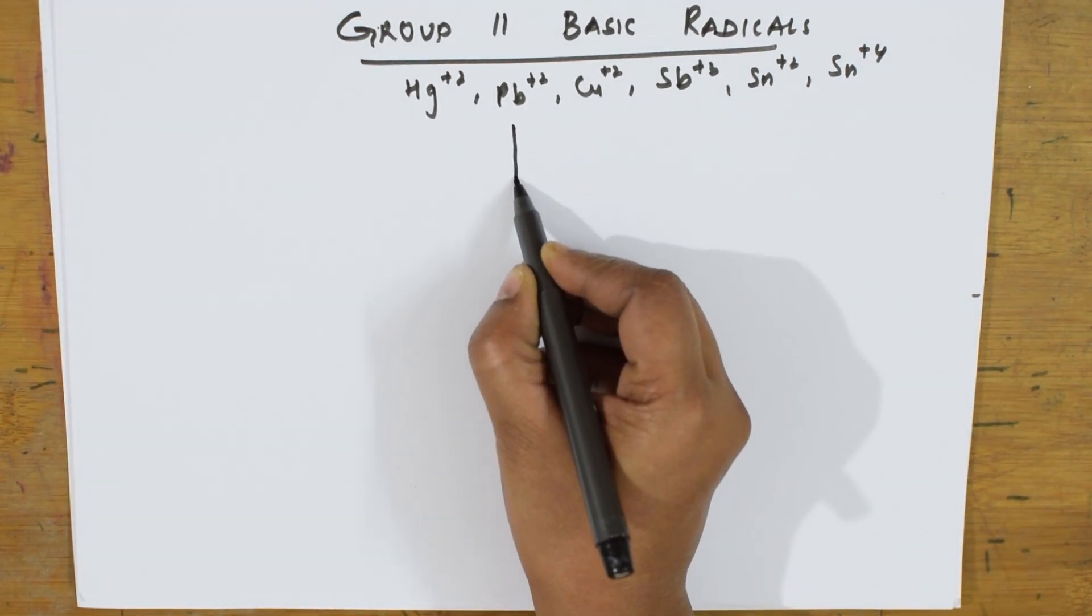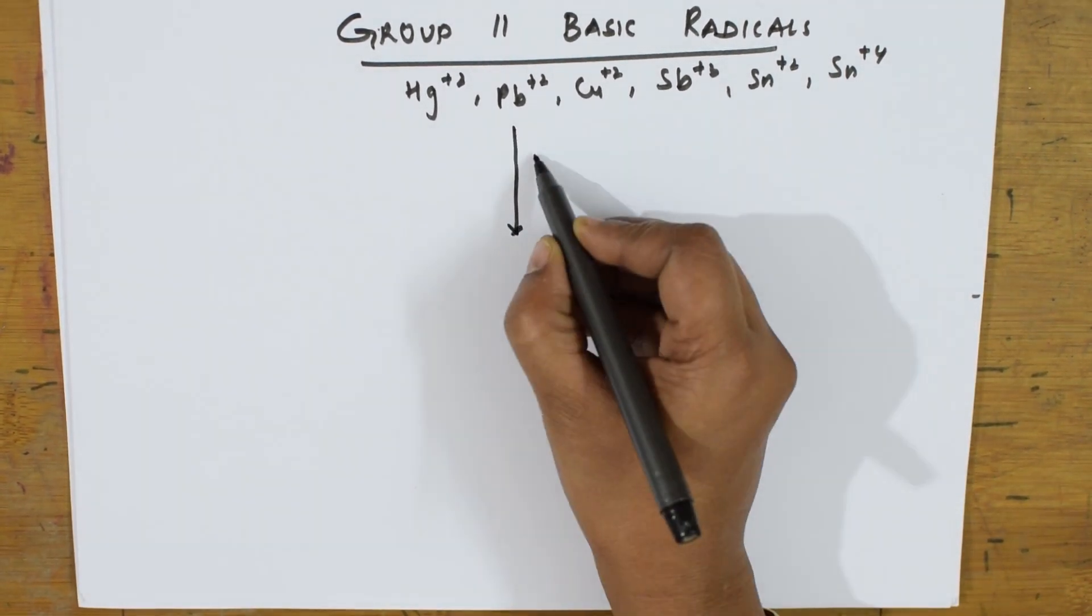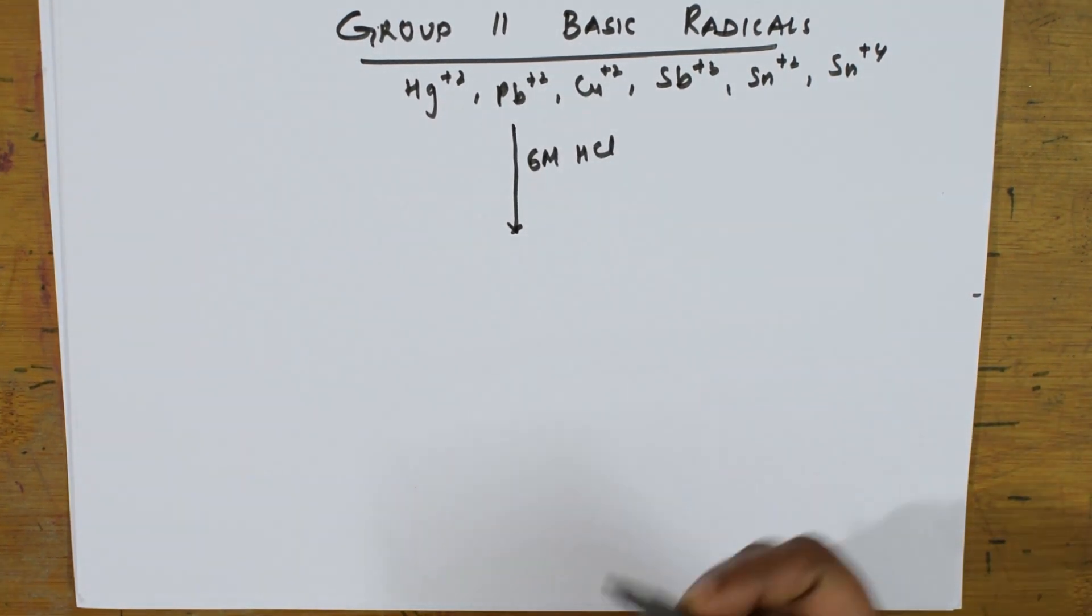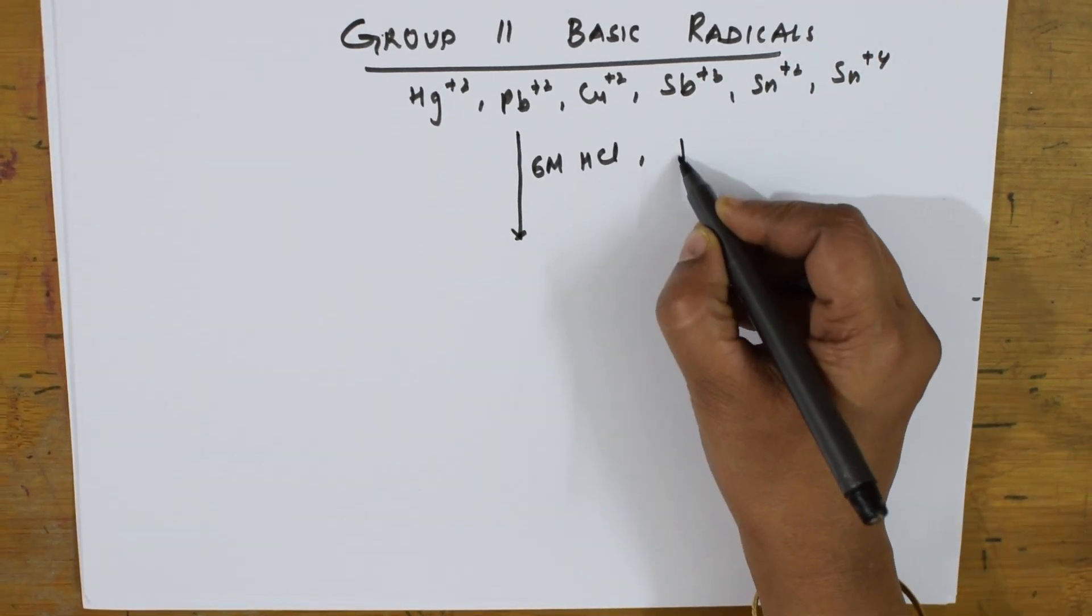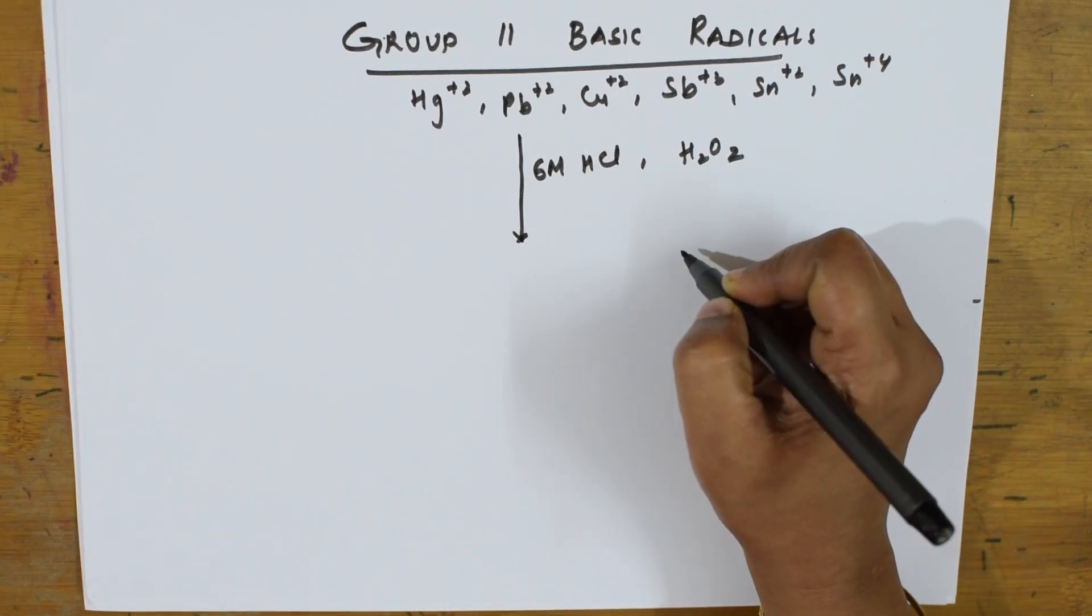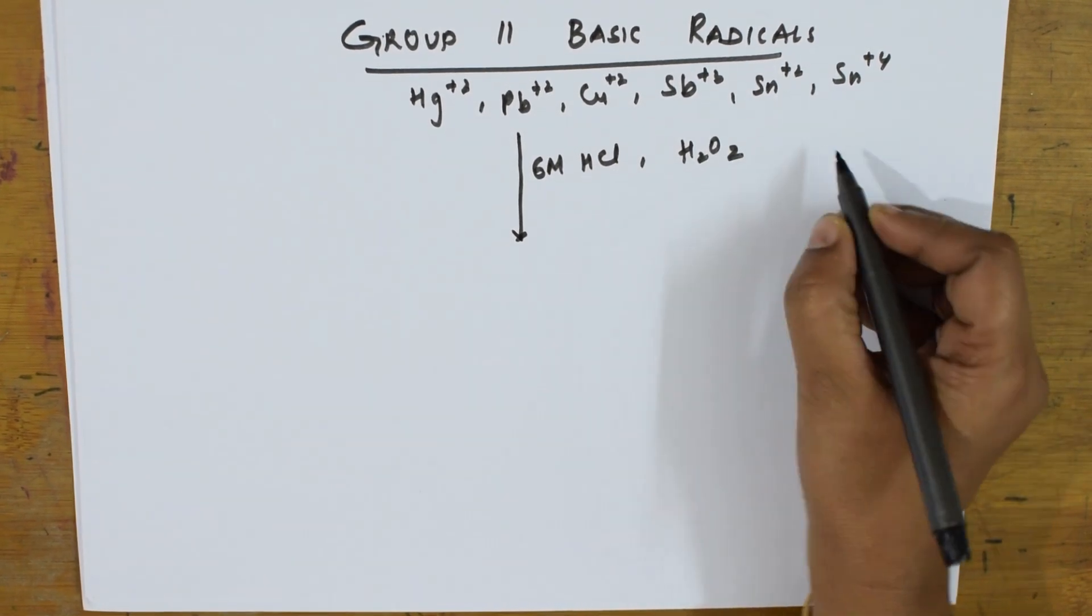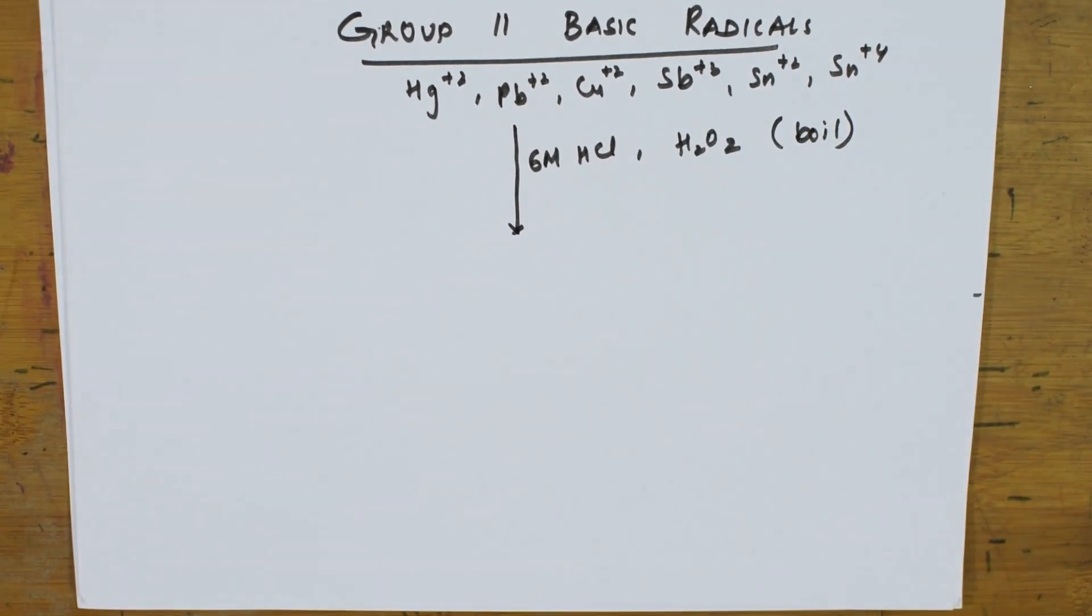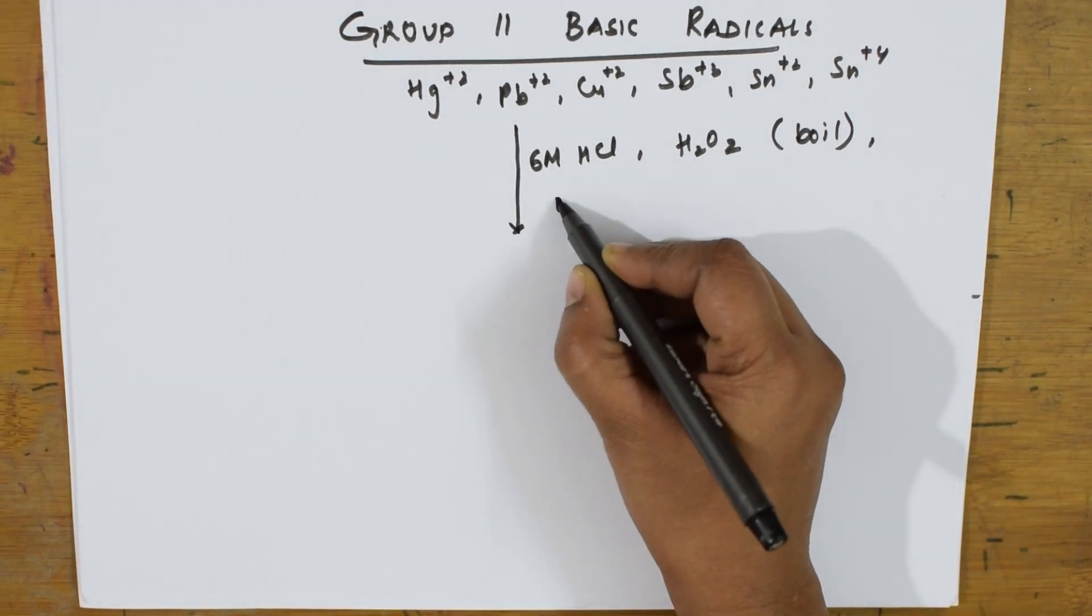To this particular thing, procedure one, suppose if I add 6 molar HCl and I will be adding even hydrogen peroxide to this. I will be boiling it. First step, boil it. After adding to this, boil the salt solution which you take, add all this and boil it. Then later, you will be adding ammonia solution.